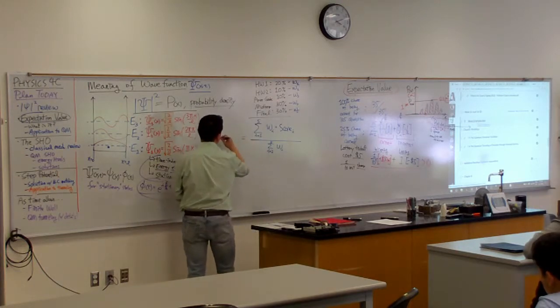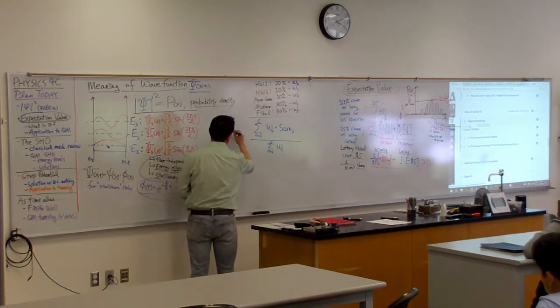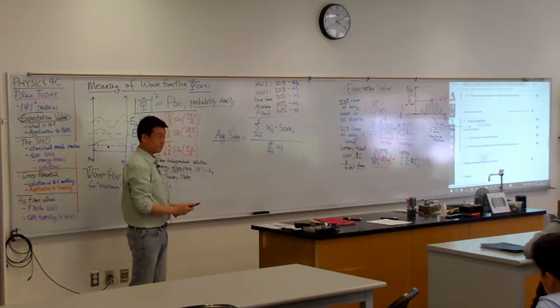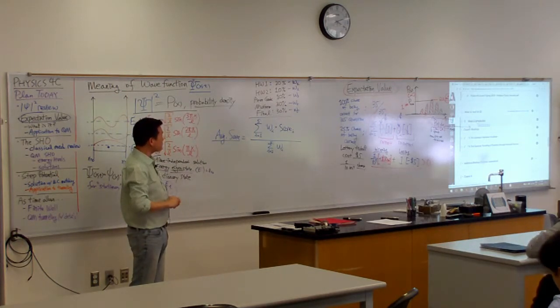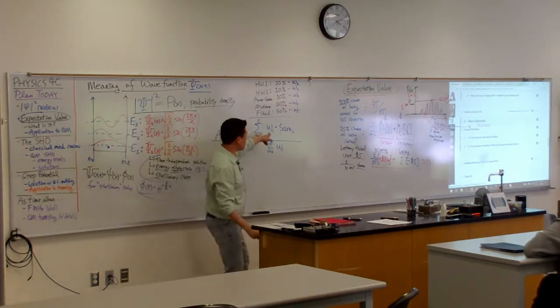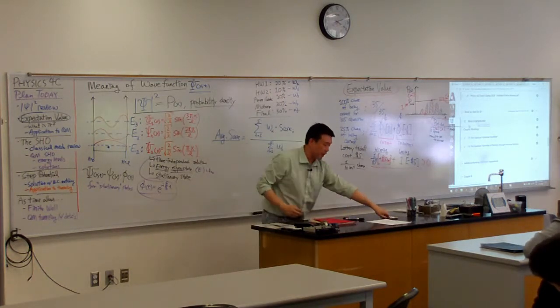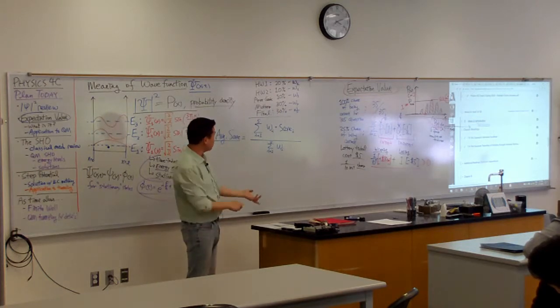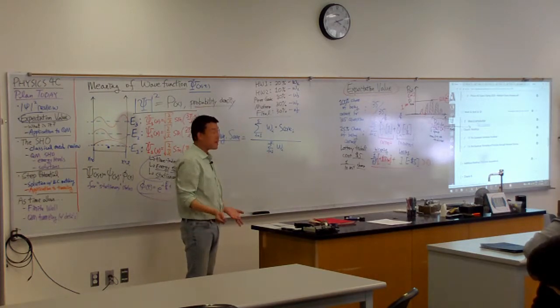This is the average score, or weighted average score. Now, this is a special case, where if you add up all the weights, you'll get 100%, so that this division won't do anything.